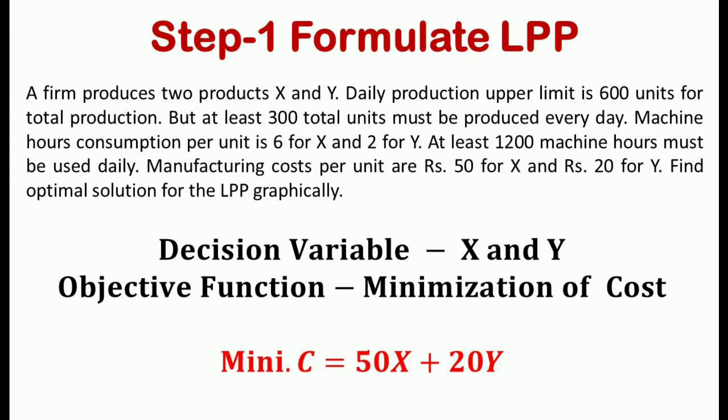Consider this example. A firm produces two products x and y. The daily production upper limit is 600 units for total production, but at least 300 total units must be produced every day. Machine hours consumption per unit is 6 for product x and 2 for product y, and at least 1200 machine hours must be used daily. Manufacturing costs per unit are rupees 50 for product x and rupees 20 for product y. Find the optimal solution graphically.